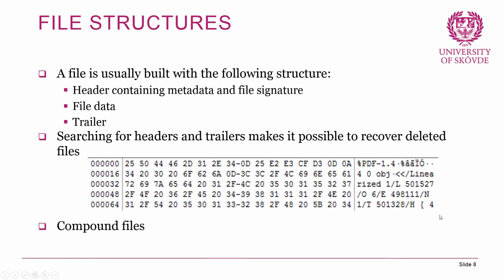Moving on to file structure — a file is usually built beginning with a header, which is a section containing some metadata. This metadata depends on the file type: it can be timestamps, GPS coordinates if it's a picture, or author information if it's a Word document. The header will also commonly contain a file signature, which is data that identifies what type of file it is. After the file header we have the file data — the actual content. Sometimes the file will end with a trailer, similar to the header, but instead of indicating the start of file it indicates the end of file.